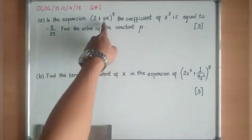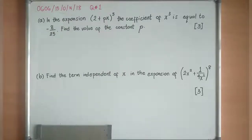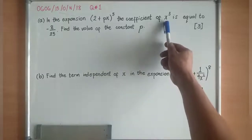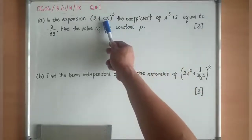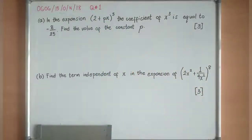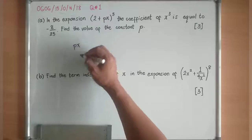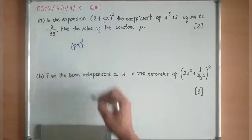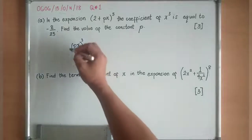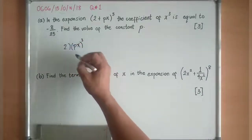So we are looking for that constant P, what will be its value if the numerical coefficient of x^3 is -8/25. Always remember, when we are talking about binomial expansion, the index of that x will always be followed by the one inside the binomial.